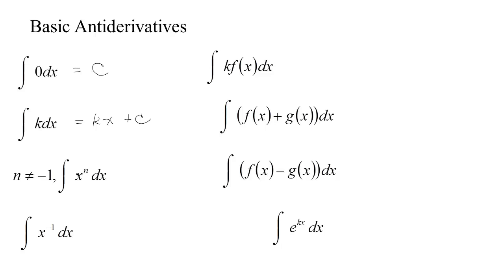What function has a derivative that's x to the n? If you have a power and take the derivative, the power decreases by 1, so if you're undoing the derivative, the power ought to increase by 1 — we ought to have x to the n plus 1. But if we check that by taking the derivative, there's an n plus 1 that comes down. Since that's just a constant, I can put a 1 over n plus 1 in front. That way when I take the derivative, the n plus 1 will come down and be cancelled, leaving x to the n. Throw in any constant and I have the entire family.